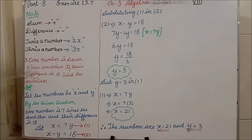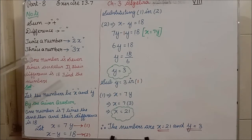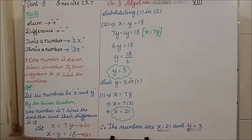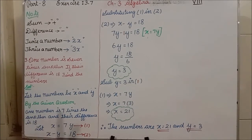Problem 3: One number is 7 times another. If their difference is 18, find the numbers. In this question, they are talking about two numbers — 'one number' and 'another number.' 7 times means 7 into any alphabet. Difference means minus. We don't know the two numbers, so we assume: let the numbers be X and Y.